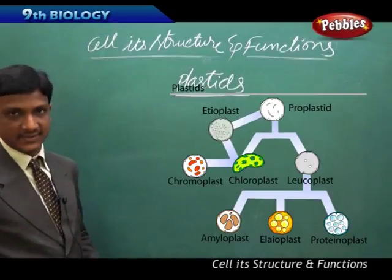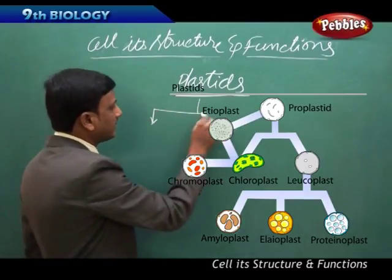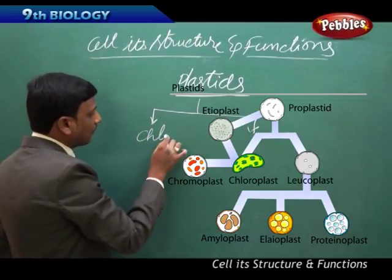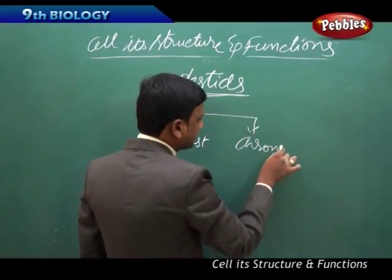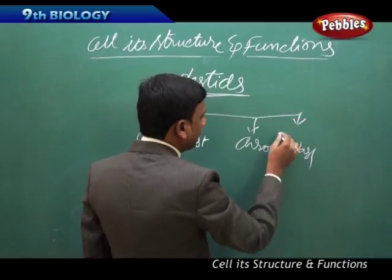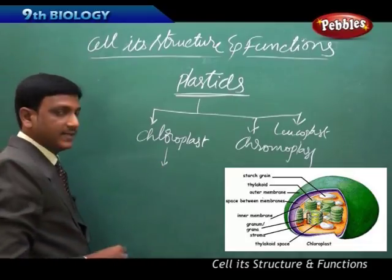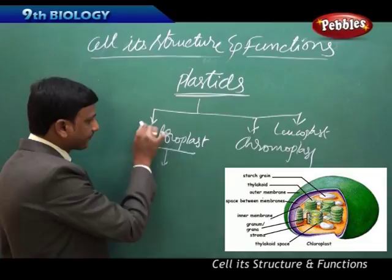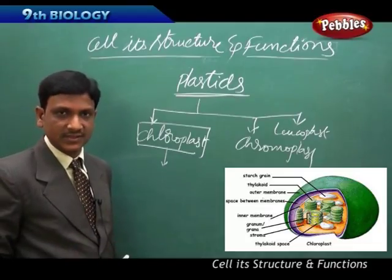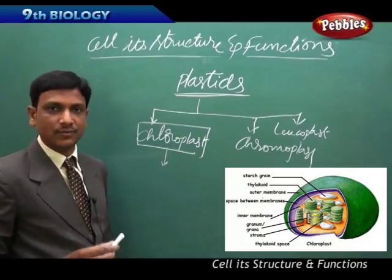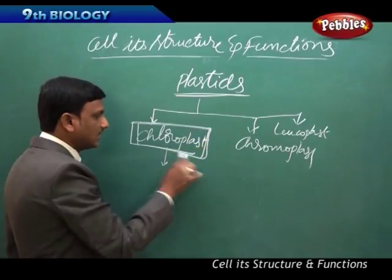Now we are going to talk about plastids. Plastids are important cell organelles found in plant cells and are of different types: chloroplast, chromoplast, and leukoplast. Chloroplasts are the green-colored plastids, which play an important role in photosynthesis — the process by which plants prepare food material, that is glucose, using carbon dioxide and sunlight. The process of photosynthesis takes place in the chloroplast.